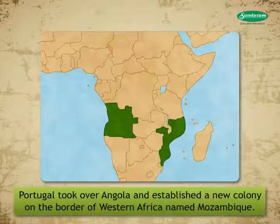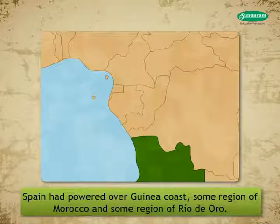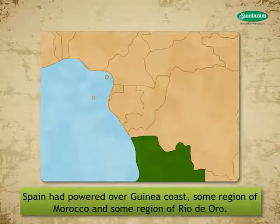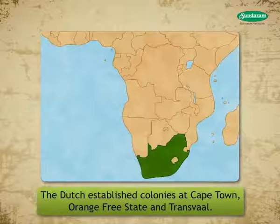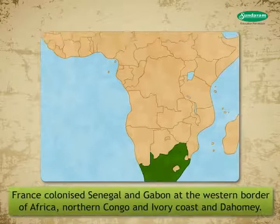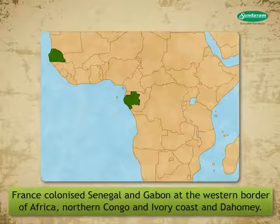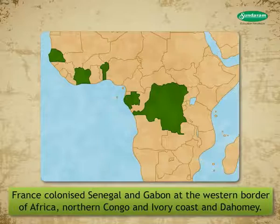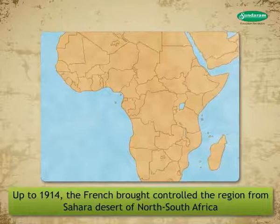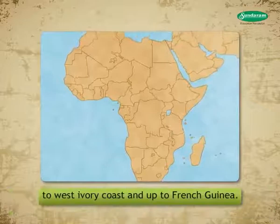Portugal took over Angola and established a new colony on the border of Western Africa named Mozambique. Spain had power over the Guinea coast, some region of Morocco and some region of Rio de Oro. The Dutch established colonies at Cape Town, Orange Free State and Transvaal. France colonized Senegal and Gabon at the western border of Africa, Northern Congo, Ivory Coast and Dahomey. Up to 1914, the French controlled the region from the Sahara Desert of North-South Africa to West Ivory Coast and up to French Guinea.